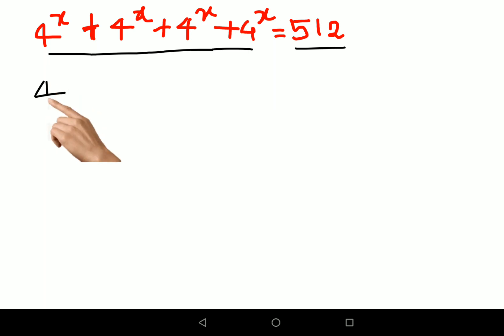Now what we can do first is let's take 4^x common, so we have 4^x(1 + 1 + 1 + 1) = 512.